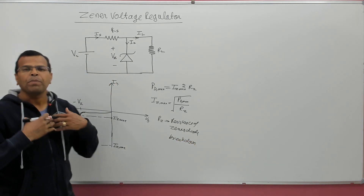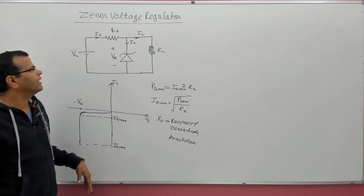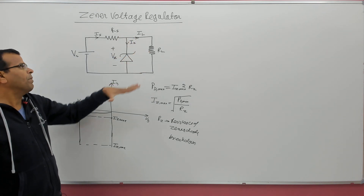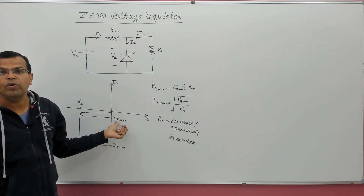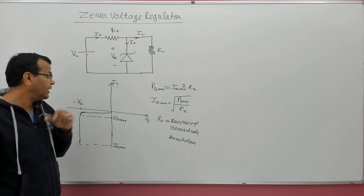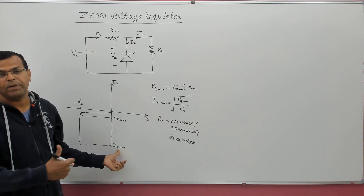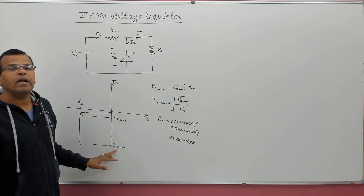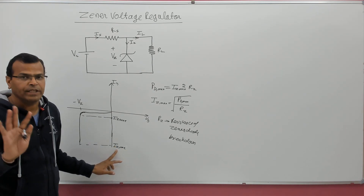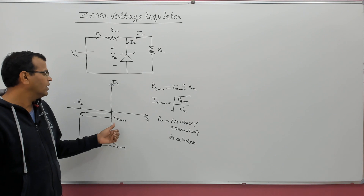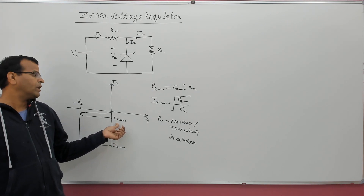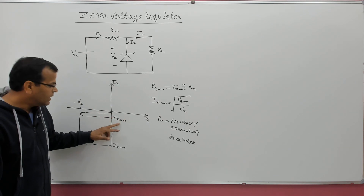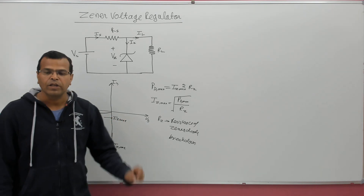The circuit always works in the breakdown region. Remember, the minimum current through the Zener diode should not fall below IZ knee, and maximum current should not cross IZ_max. If nothing is given, then there is no limit on IZ_max — any current can flow. If IZ knee is not given, that means the current can reduce to zero. That will be our assumption if IZ knee and IZ_max are not given.